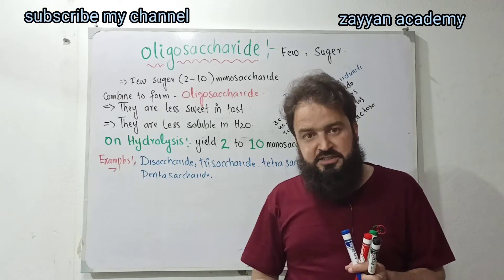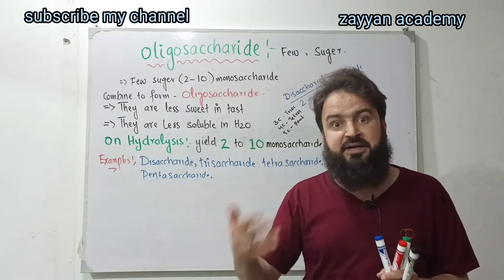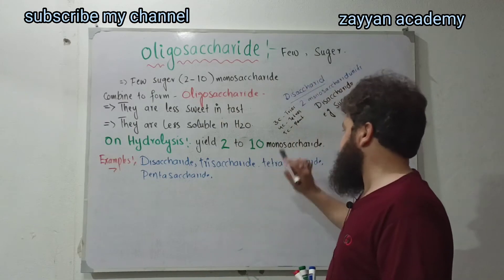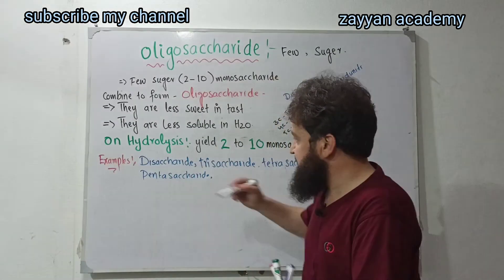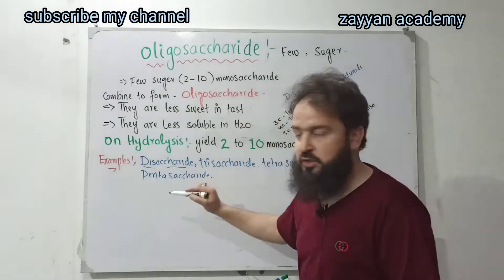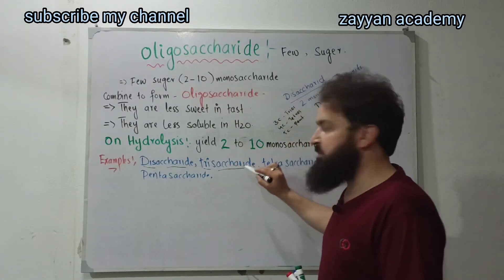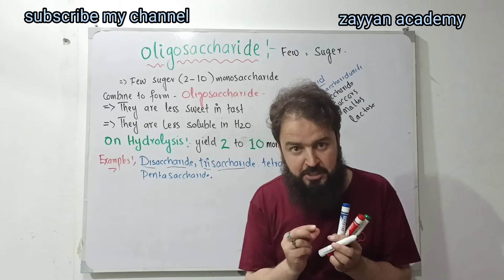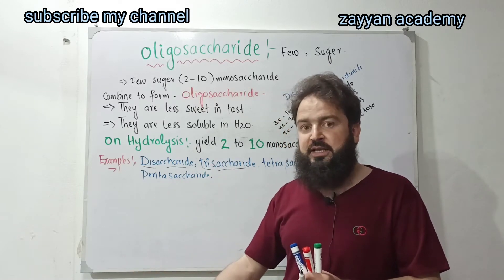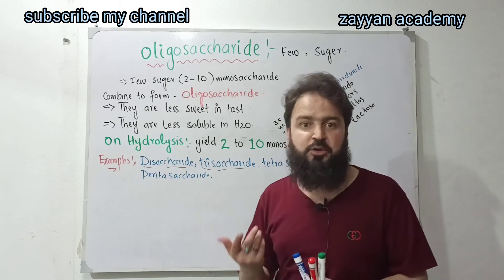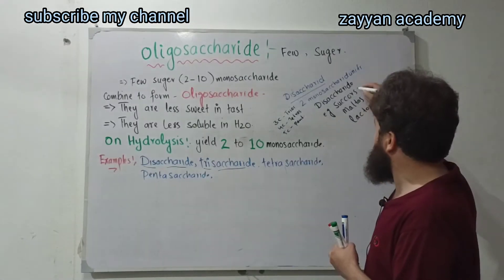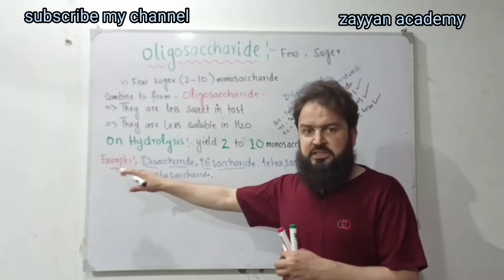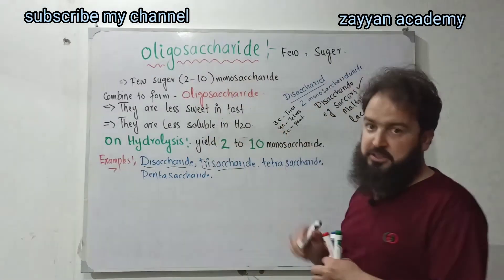The types are: disaccharide, trisaccharide, tetrasaccharide, pentasaccharide, and so on. Disaccharide means two monosaccharides combined to form a large molecule. So disaccharide comes from the combination of two monosaccharide units.